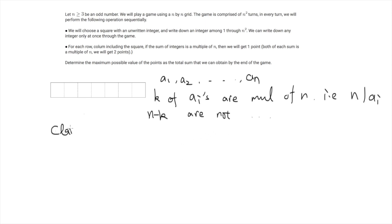Then I claim that the total number of points from this row is going to be smaller than k plus n minus k over 2. And the intuition is really simple. From these k elements which are multiples of n, we get at most k points. And from these n minus k elements which are not multiples of n, we need at least two of them to form a multiple of n. So to get one point we need at least two elements and this is why we get n minus k over 2.